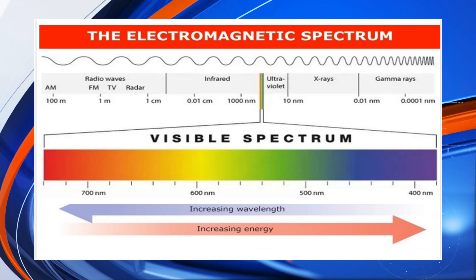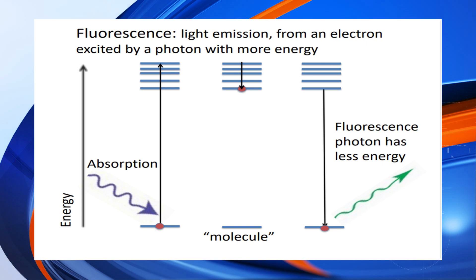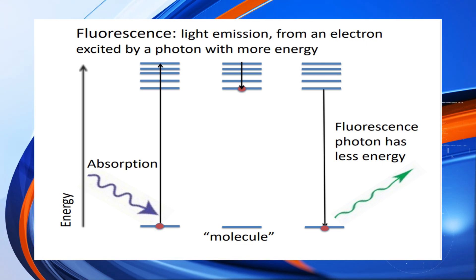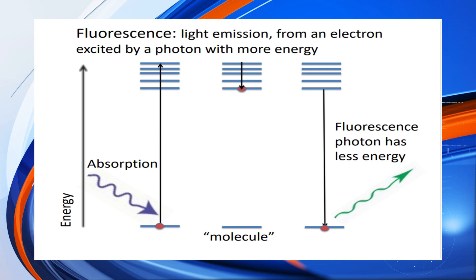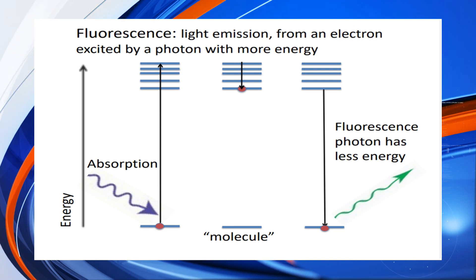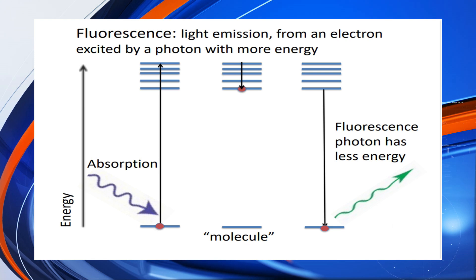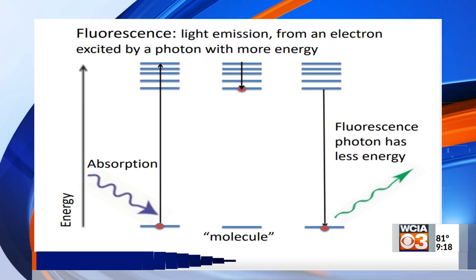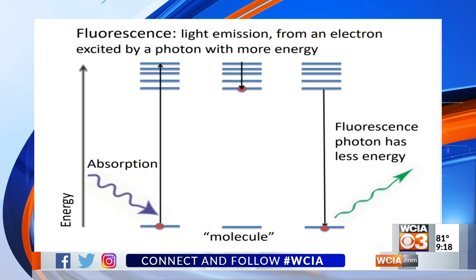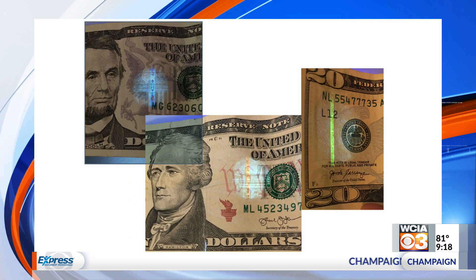Fluorescence is when you direct light onto some materials — the material absorbs the photon, loses some energy rattling down through high energy levels, and then makes a final jump. The photon that comes off has less energy than what you started with. For example, we could shine ultraviolet light on something and get visible light out.